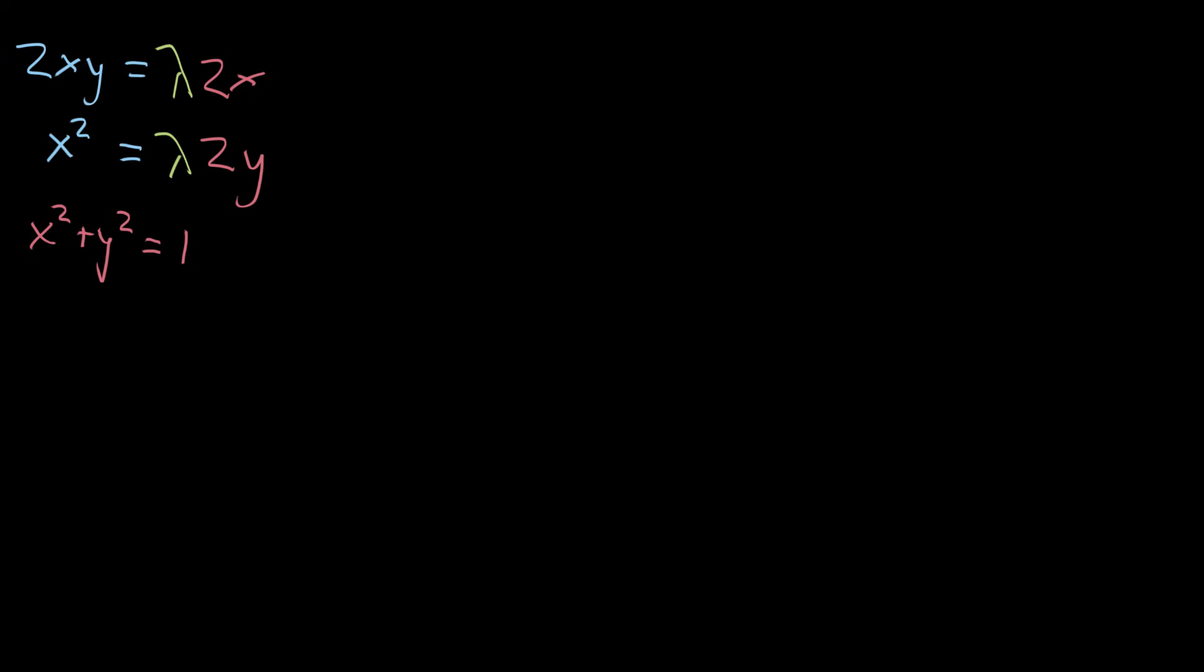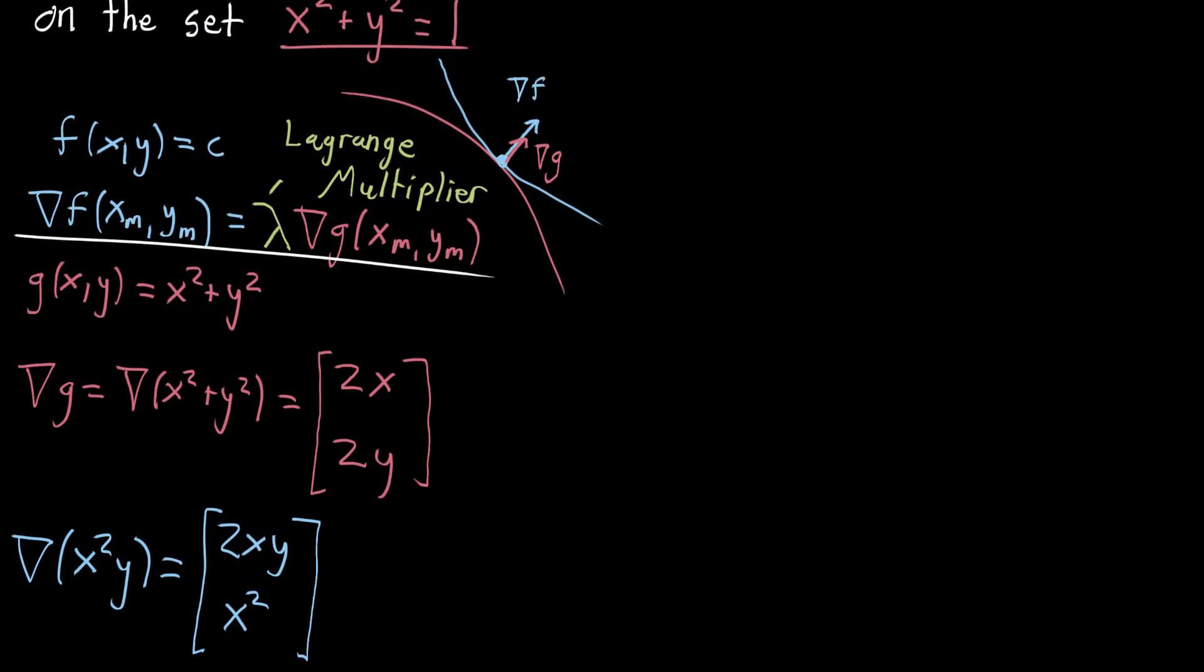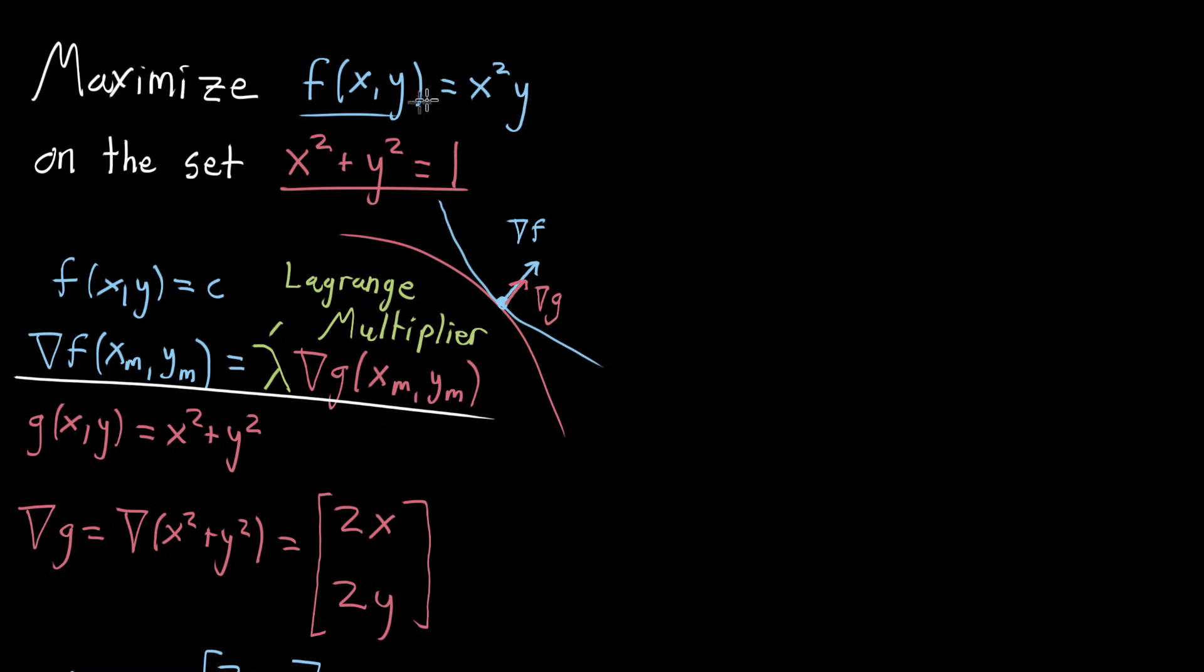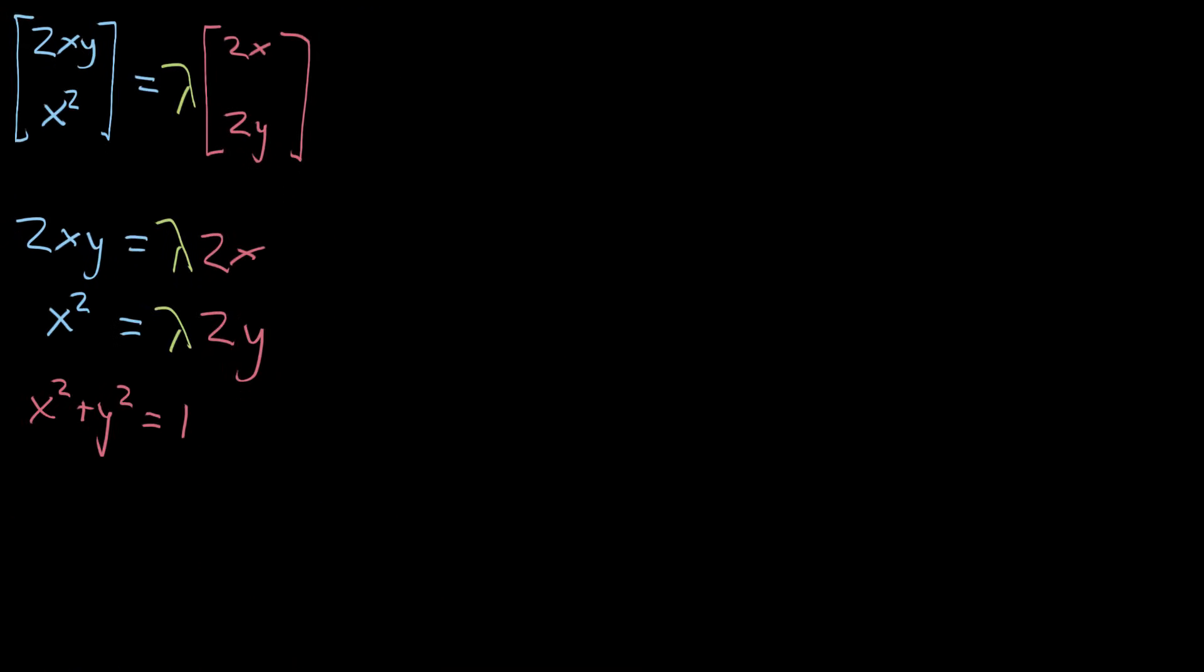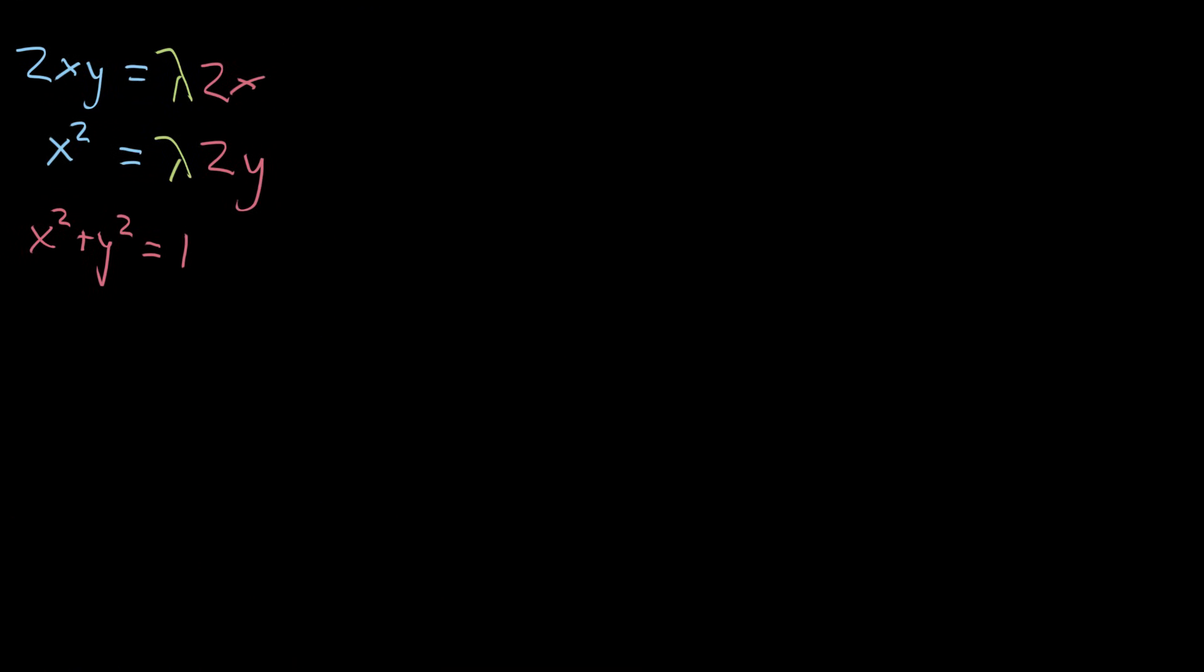So in the last two videos, we were talking about this constrained optimization problem where we want to maximize a certain function on a certain set, the set of all points x, y where x squared plus y squared equals one. We ended up working out through some nice geometrical reasoning that we need to solve this system of equations, so there's nothing left to do but to just solve the system of equations. We'll start with this first one at the top, see what we can simplify.